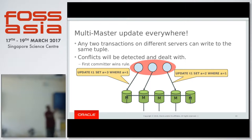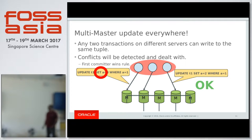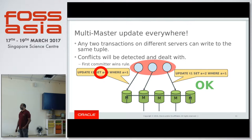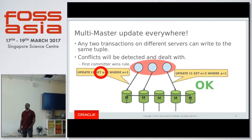Let's take an example where both clients are trying to update the same tuple. We have a certification database on all the servers. Whoever comes first into the group will win and commit, and the other transaction will be rolled back. By looking at the certification database, we can identify that a particular transaction is a conflicting one. The certification database is a kind of cache maintained on all the machines separately — every server has its own certification database in memory.